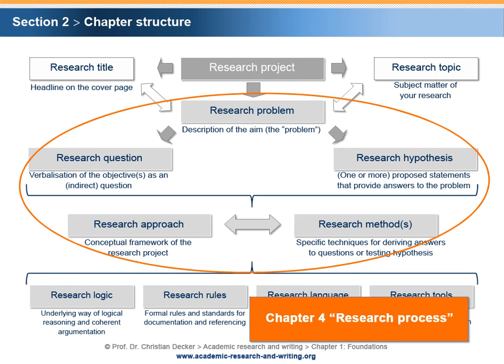In Chapter 4, the research process is addressed. Different aspects of academic research are affected: the research problem, the research question, the research hypothesis, the research approach, and the research methods. Thereby, this chapter combines related aspects of academic research in a coherent way.